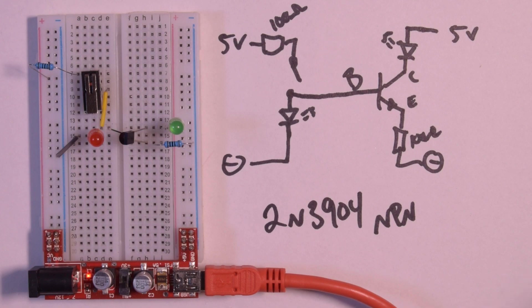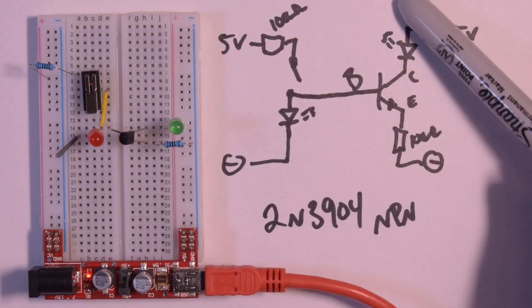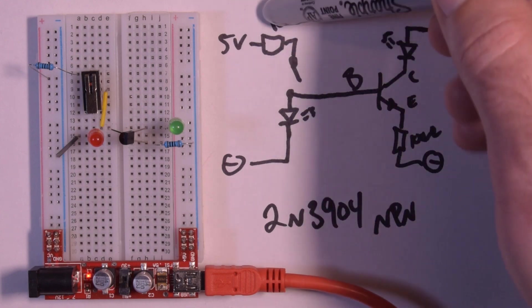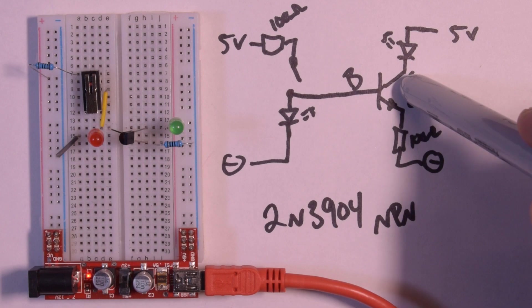Because the base of this transistor is now being activated by this switch, and so we have a connection between here and here. But that also means that current can now flow from this end to this end, and if current can flow, that means voltage can flow.